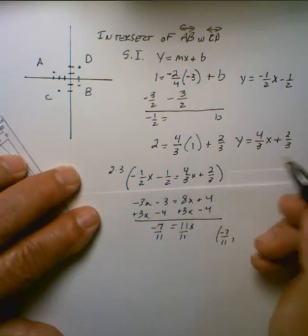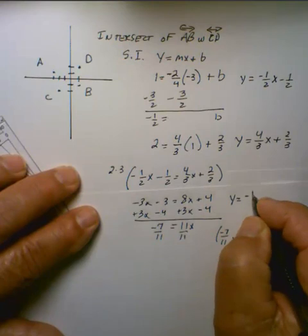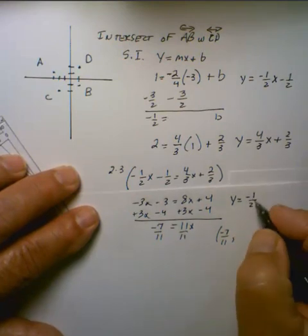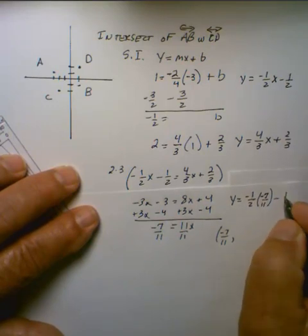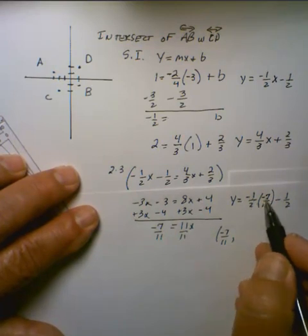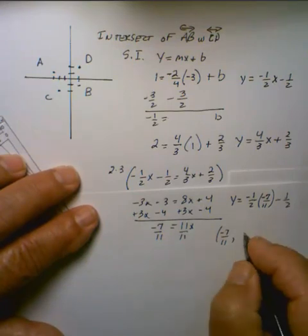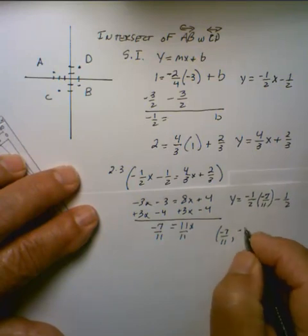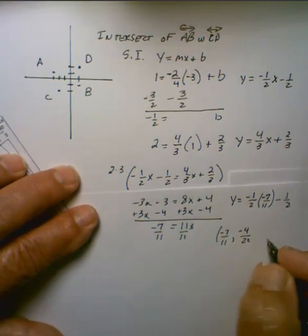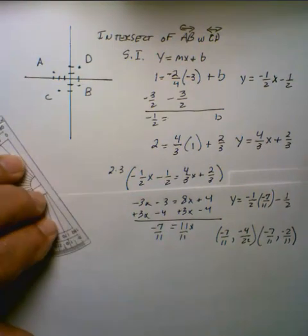Putting that into either equation, I'm going to choose this equation, we get Y equals minus 1 half slope times the point minus 7 elevenths minus 1 half. Clearly this is 7 over 22, 1 half being 11 over 22. 11 minus 7 is negative 11 plus 7 rather is negative 4 over 22, which we're going to reduce to our final answer minus 2 over 11 as our Y coordinate.